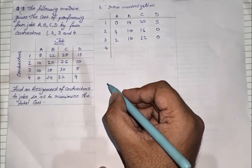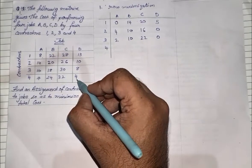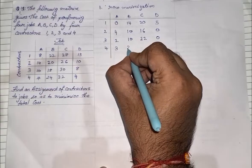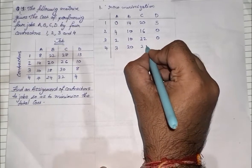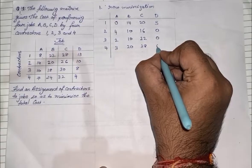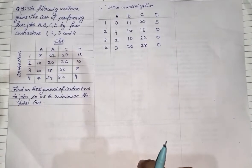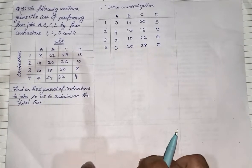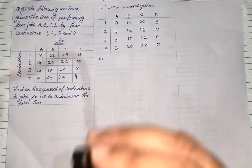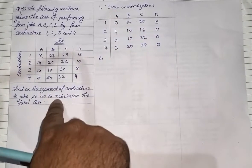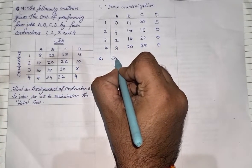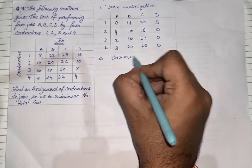In the last row, the minimum value is 4: 7 − 4 = 3, 24 − 4 = 20, 32 − 4 = 28, 4 − 4 = 0. Step one — row minimization — is complete. Now step number two will be column minimization.